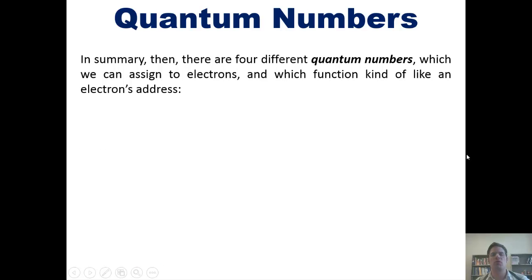So, in summary, there are four different quantum numbers which we can assign to electrons and which function kind of like an electron's address. The first one is n, or the principal quantum number. This number can be any integer starting with 1, and tells us how far away an electron is from that atom's nucleus. The larger the n number, the further away that electron is, and the higher in energy and more reactive it is.